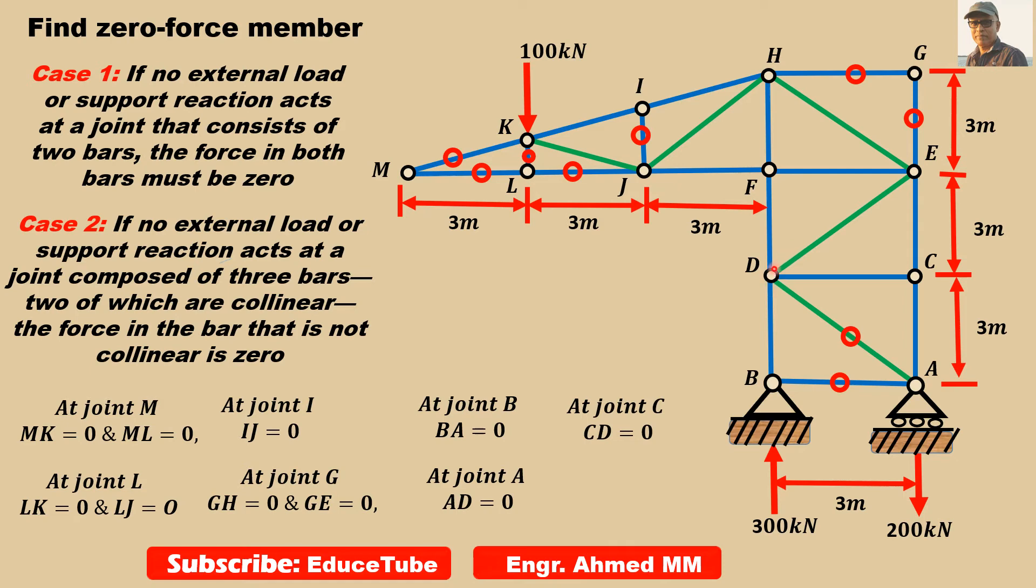Let's mark CD also. Now if you look at this joint D, you can see this is no force, this one also no force. And BD and DF, these two are collinear. So according to Case 2, this third one which is not collinear will carry also no force. At joint D, DE equals zero.